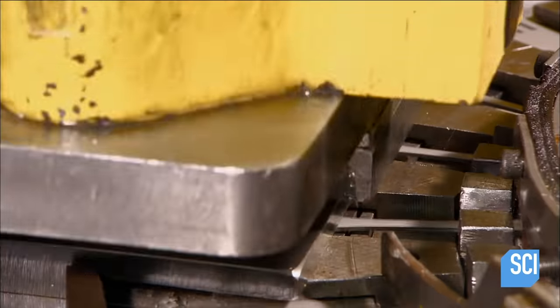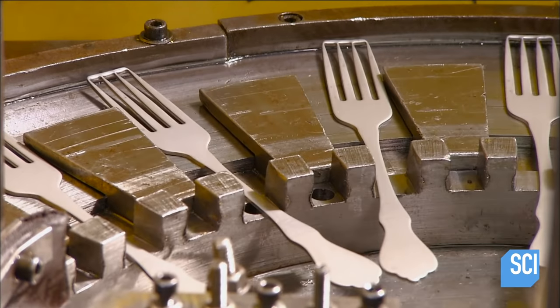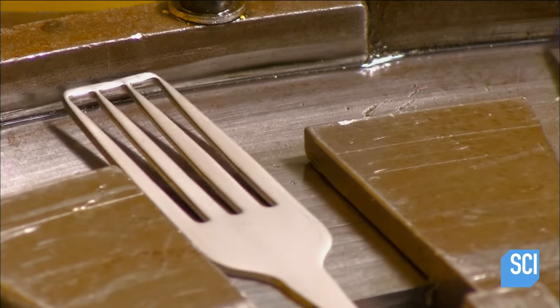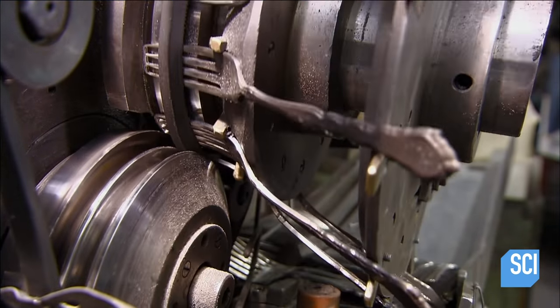Forks go through the same steps as spoons before going into a press that cuts the tines in two stages. A support bar keeps the tines from moving while a coining press puts a slight bend in them. The next machine slices off that bar and stacks the finished forks.